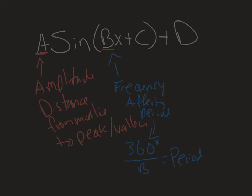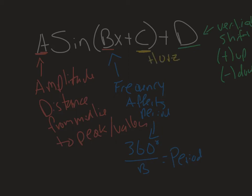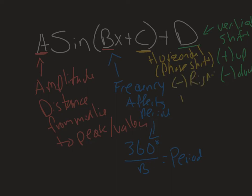The last two parameters deal with shifts we've talked about all year. D is your vertical shift — positive moves it up, negative moves it down, just as you'd expect. Then there's C, technically called the horizontal shift, but sometimes also called the phase shift. It behaves exactly the same way — just remember it's backwards from what we'd think: negative moves it right, and positive moves it left.